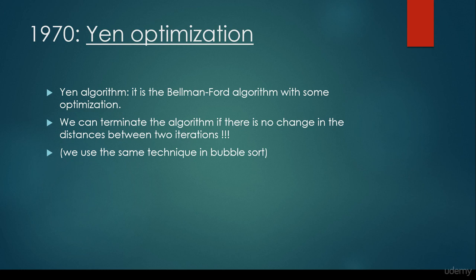We can terminate the algorithm if there is no change in the distances between two iterations. We have been talking about that we make V minus 1 iterations, where V denotes the number of vertices in the graph. But maybe we just have to make a few iterations at the beginning, and further iterations are not going to change the final distances significantly, so we don't have to make the last few iterations.